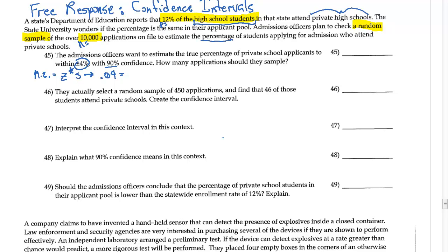And then the standard deviation is the square root of P, my 12%, times my 1 minus P, which is going to be 0.88, all over the sample size N that I want to look for.